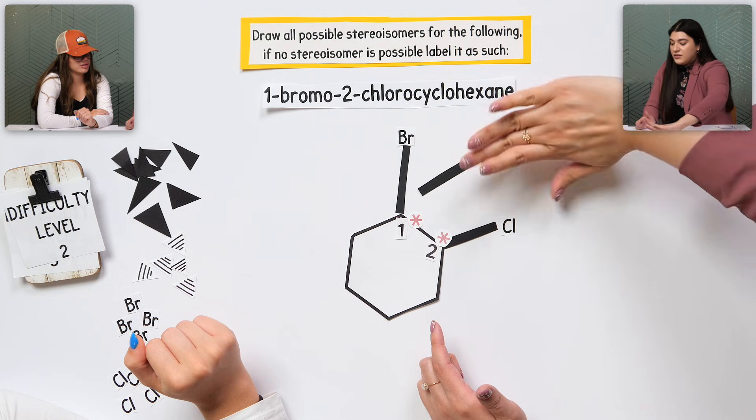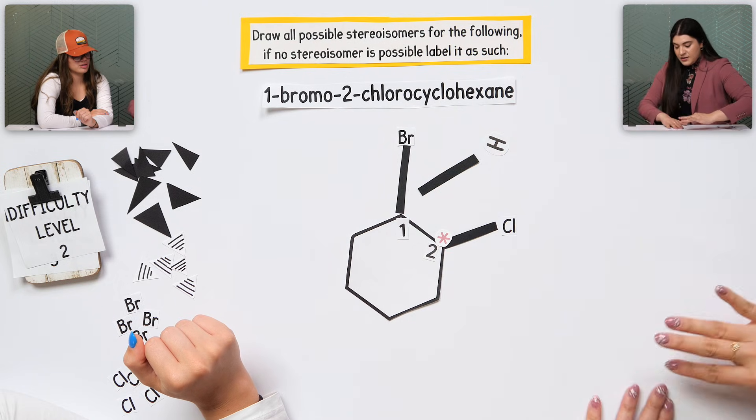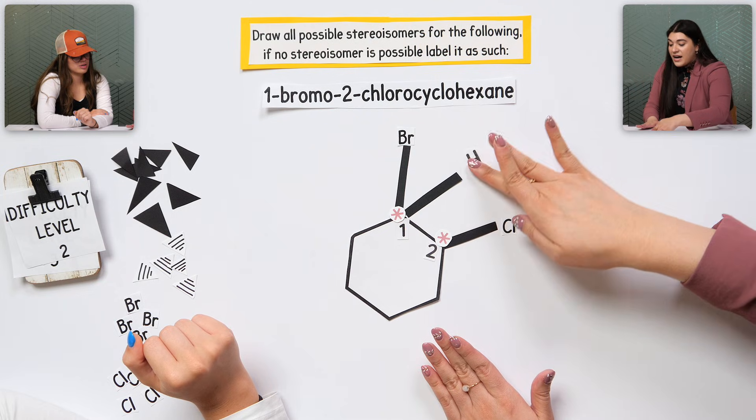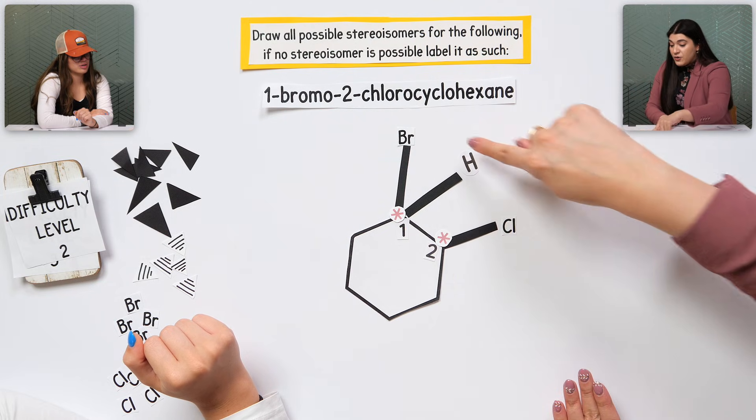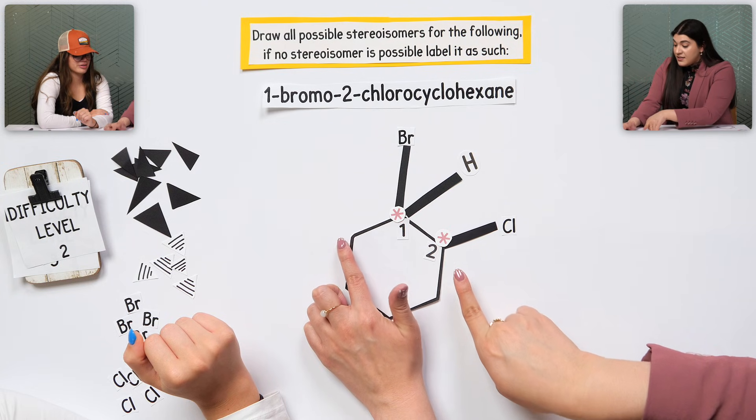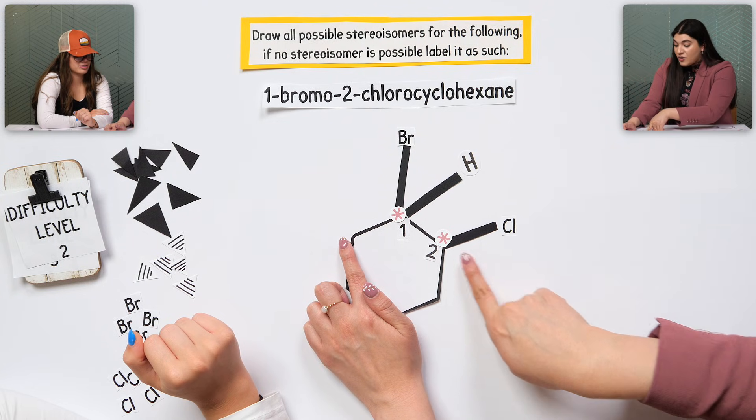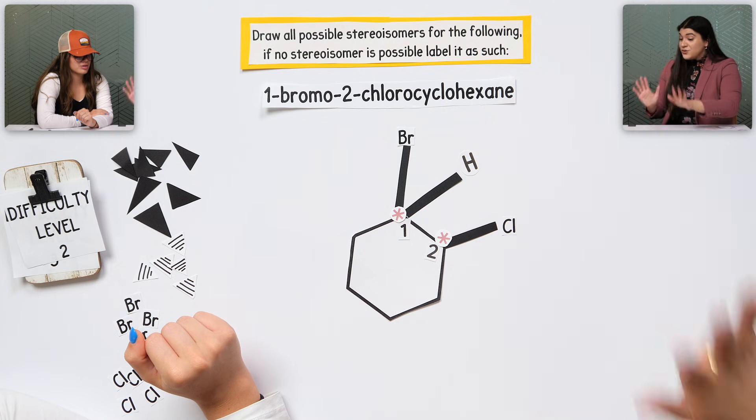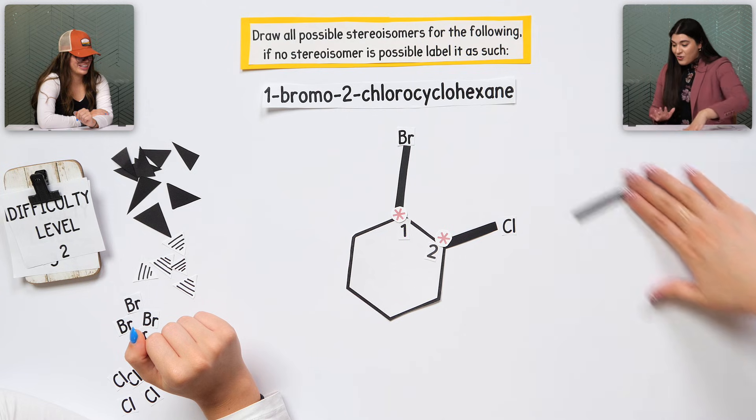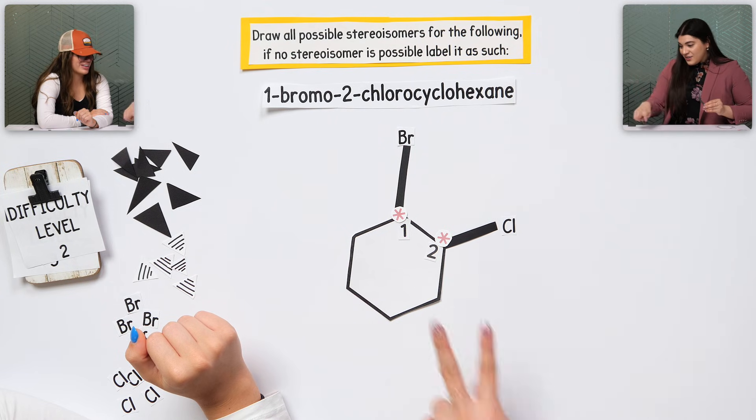Same concept for this one. We still have a hydrogen. One group, second group, that's different. Looking at the carbons here. This is a CH2. This is a carbon connected to chlorine. They're different. So, so far, so good. You're right.